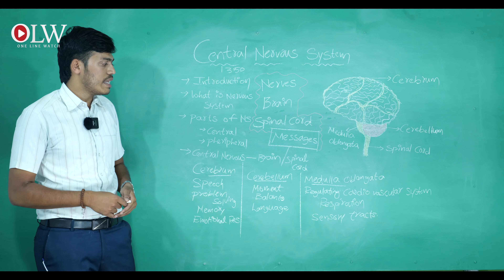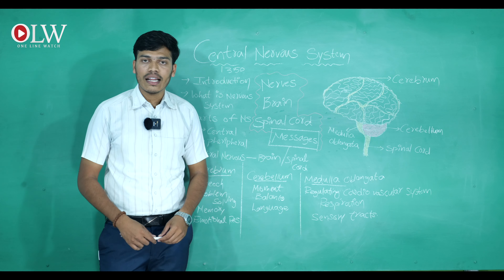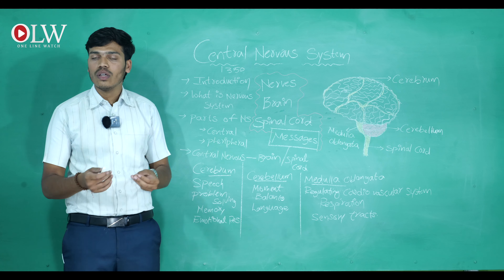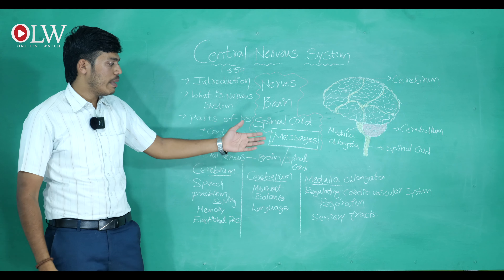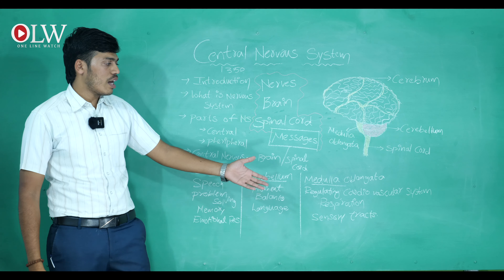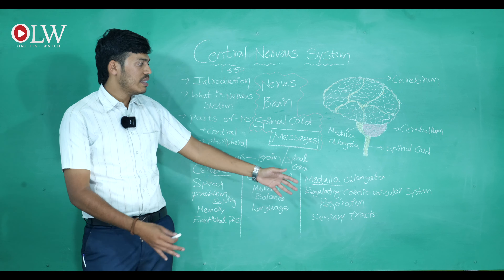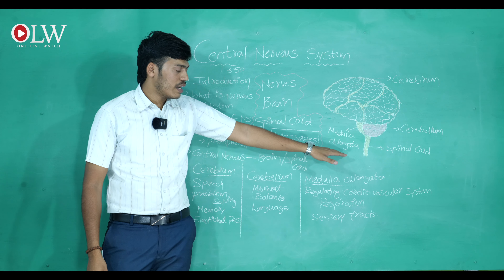The third part is the medulla oblongata. The medulla oblongata regulates the cardiovascular system — the movements of our heart, including contraction and relaxation. Heart functions are controlled by the medulla oblongata. At the same time, it also controls respiration and sensory tracts. These are all the functions of the medulla oblongata.